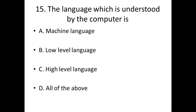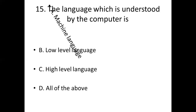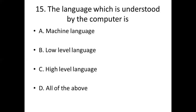Fifteenth bit: The language which is understood by the computer is. Option A: machine language. Option B: low level language. Option C: high level language. Option D: all of the above. Answer: Option A — machine language.